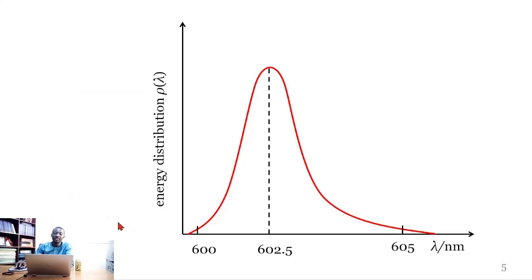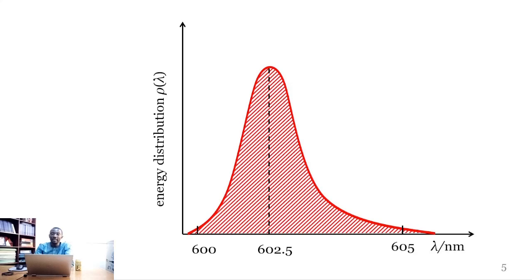So if we plot our energy distribution on the vertical axis and then the wavelength on the horizontal axis, we are likely to obtain a curve that looks like this. This is the median wavelength above the medium, the highest peak.